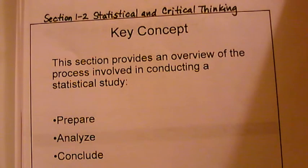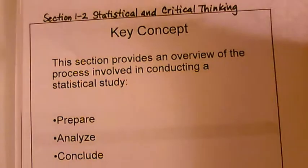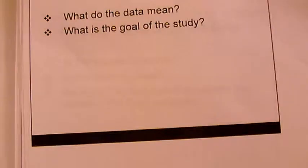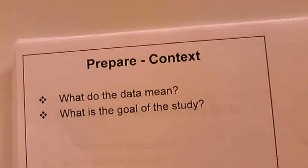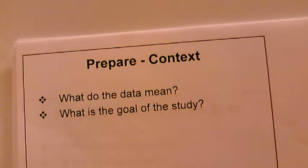The first concept is prepare. As part of preparing, you have to do context, look at the source of the data, and look at your sampling method. The first thing we'll look at is context when preparing. We want to ask ourselves two questions: what do the data mean, and what is the goal of the study?